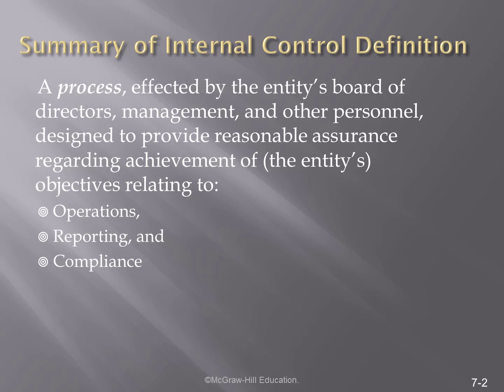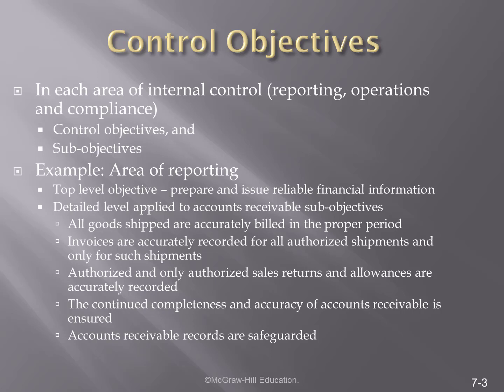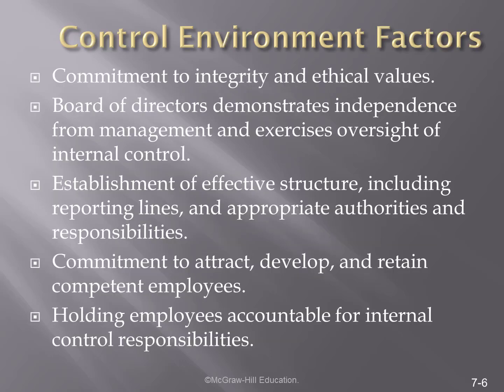You notice that it is affected by the board of directors and management. Internal control structures are a top-down process embedded within the organization. Given that the controls relate to the objectives of the organization, let's focus on a couple of examples of objectives. The preparation of reliable financial information — we want to make sure that all goods that are shipped are accurately billed in the proper period, that invoices are accurately recorded, that items are paid for and paid for only once, and that authorized and only authorized sales returns and allowances are reported.